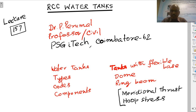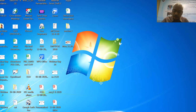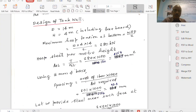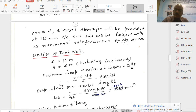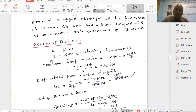That is what we have discussed so far. The lapped stirrups are provided at 180 mm centre to centre, lapped with the meridional reinforcement of the dome. Now we will take up the design of the tank wall.